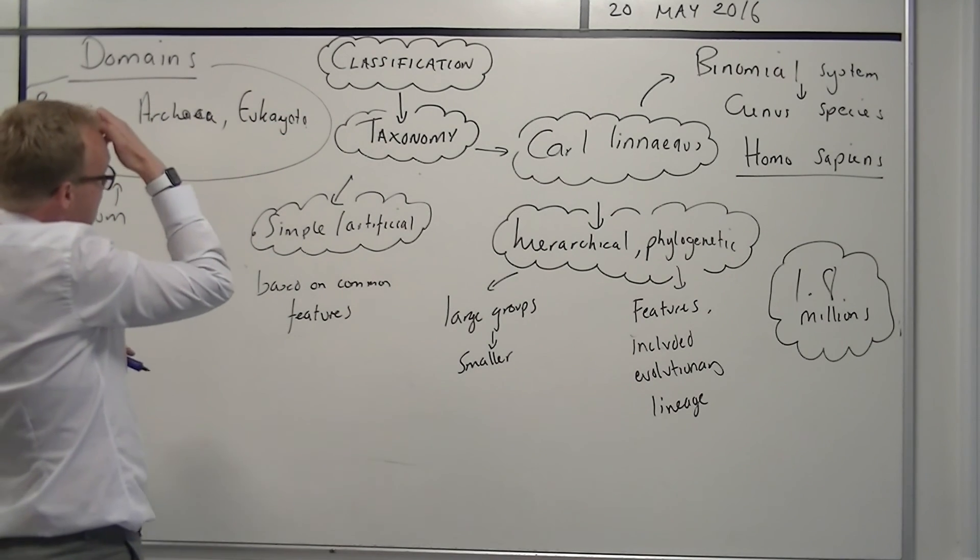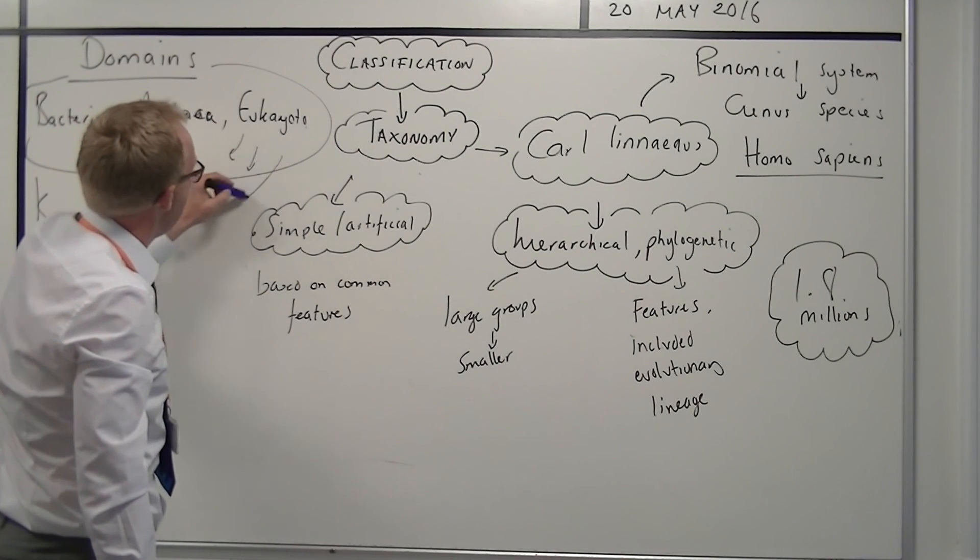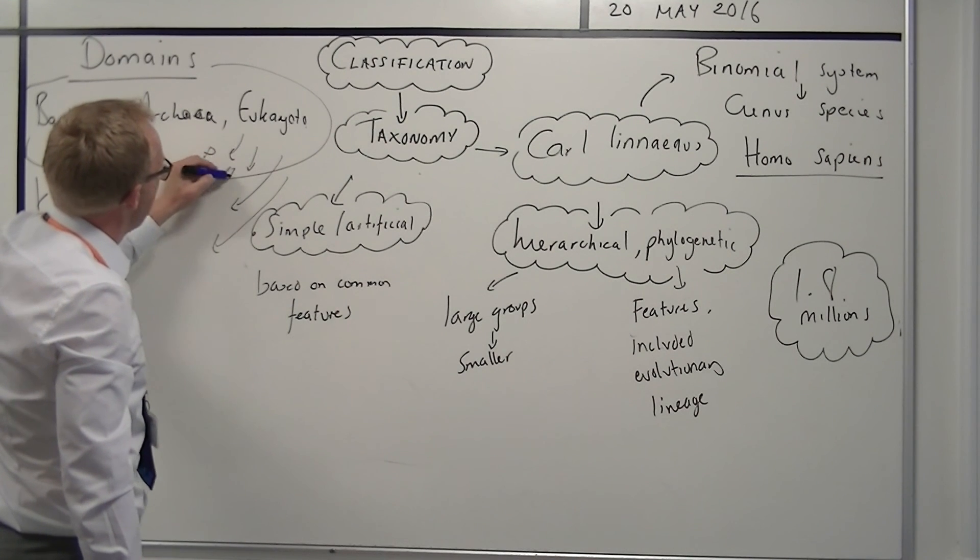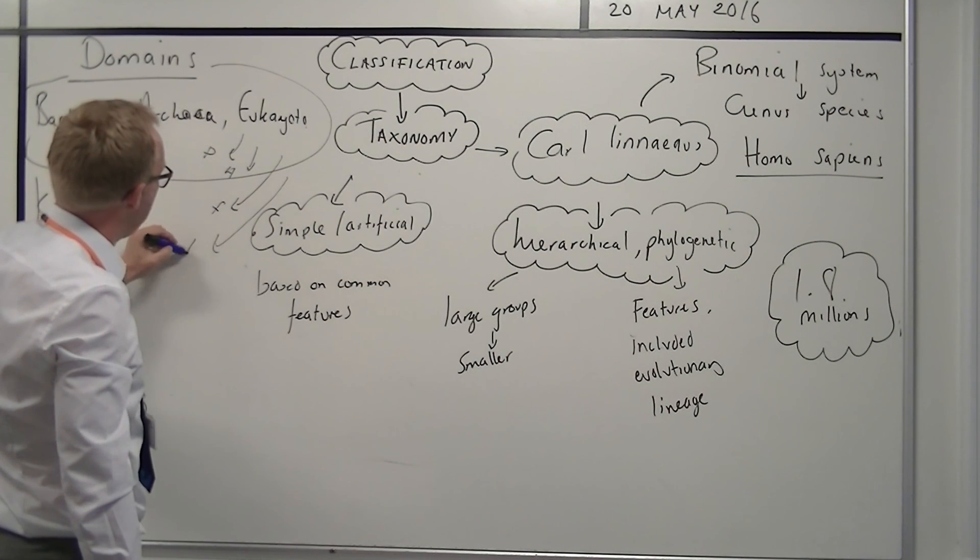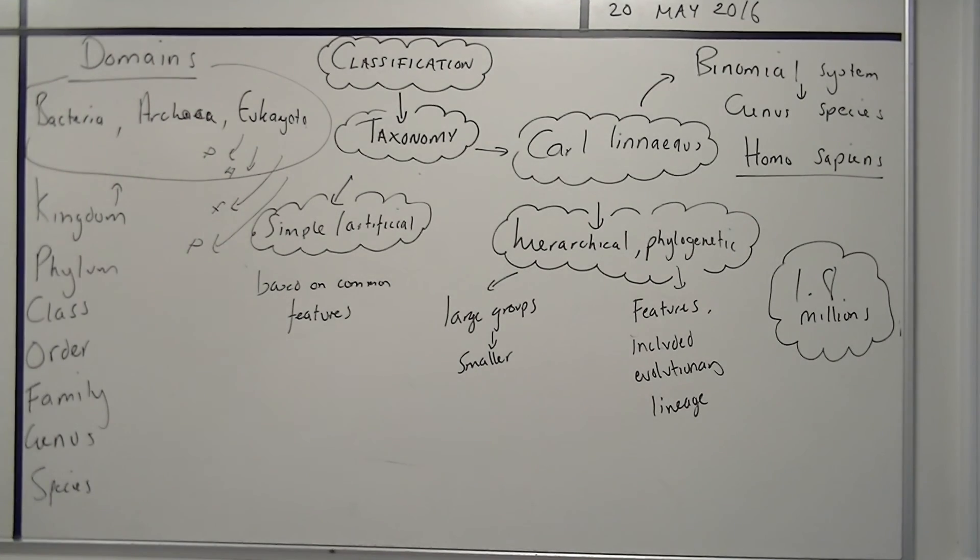And in particular, I think we need to be aware that the eukaryotes is split into four main kingdoms. Those are plants, animals, fungi, and protoctista.